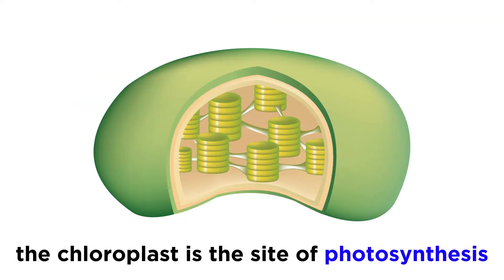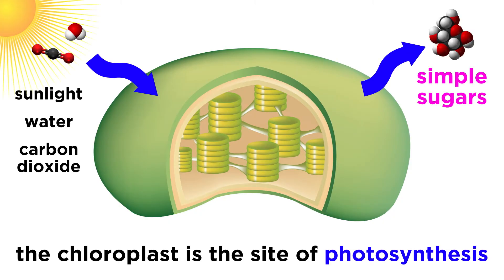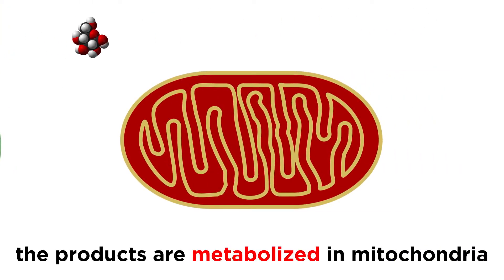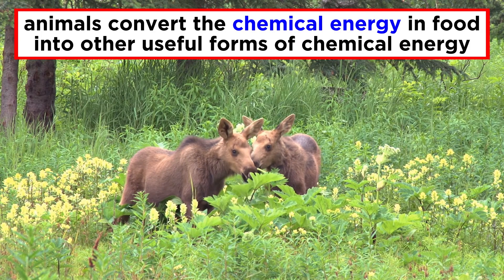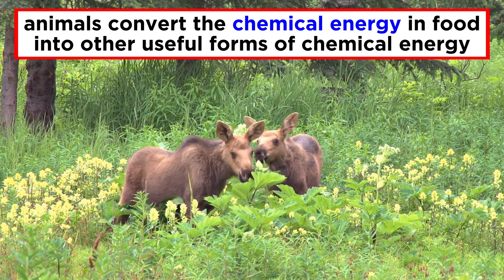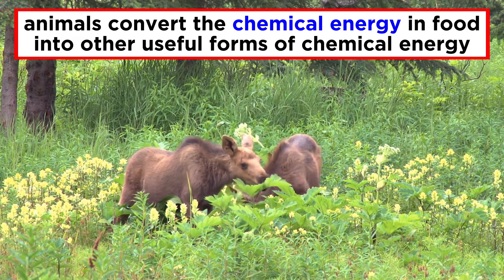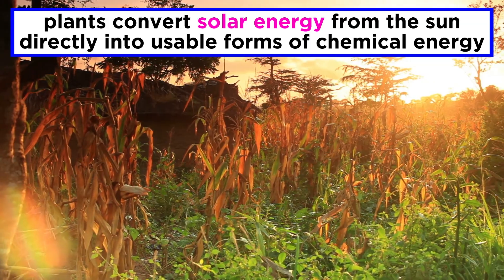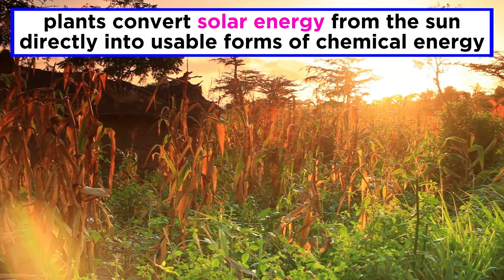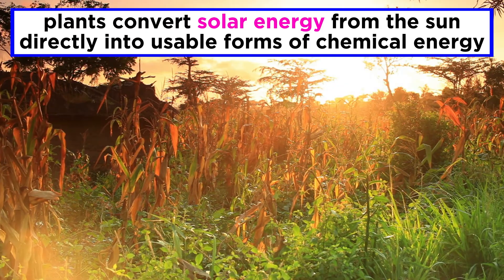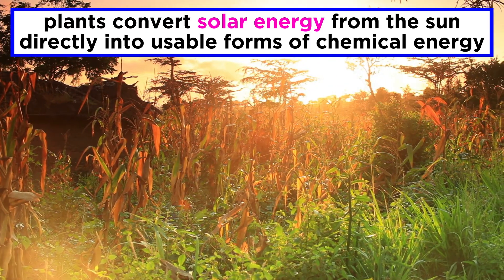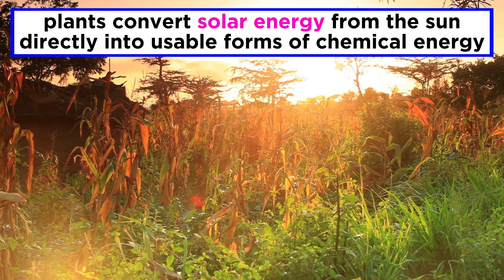The chloroplast is the photosynthetic organelle that produces simple sugars from sunlight, water, and carbon dioxide, which are then metabolized in the mitochondria. Whereas animals ingest food and convert the chemical energy in the food to other forms of energy for cellular function, plants convert solar energy into chemical energy, in essence making their own food, which is then converted into energy for cellular function.